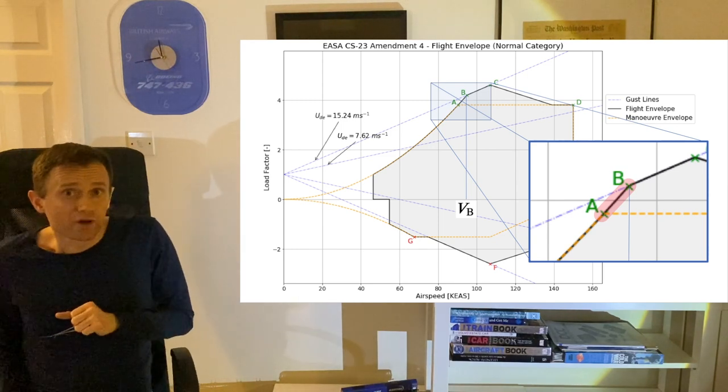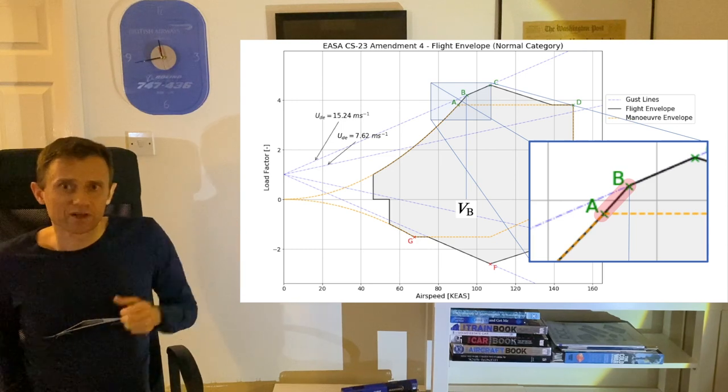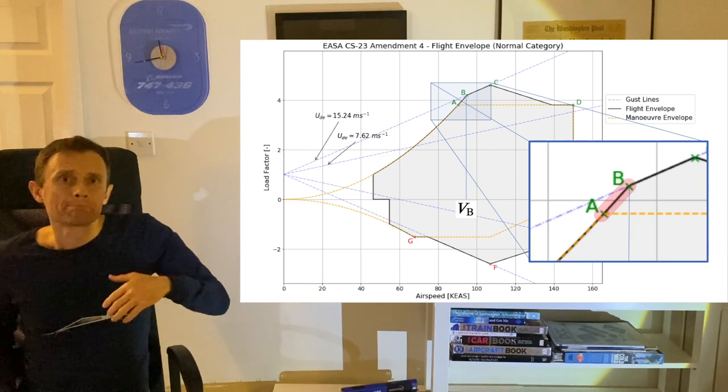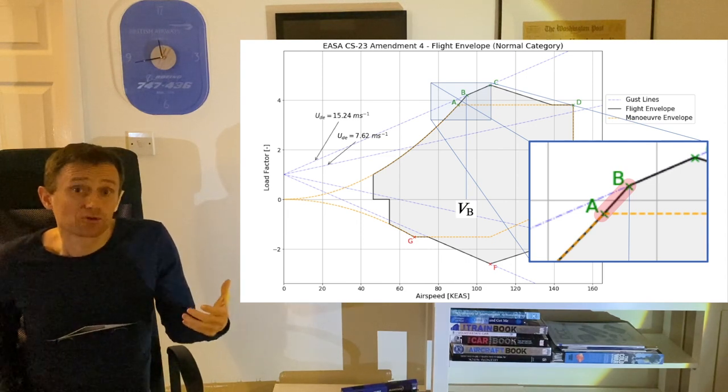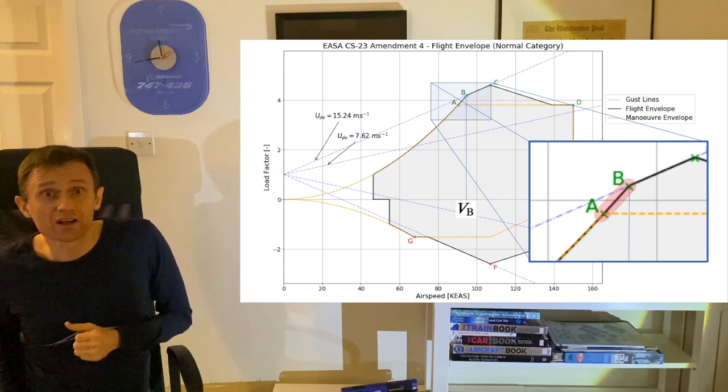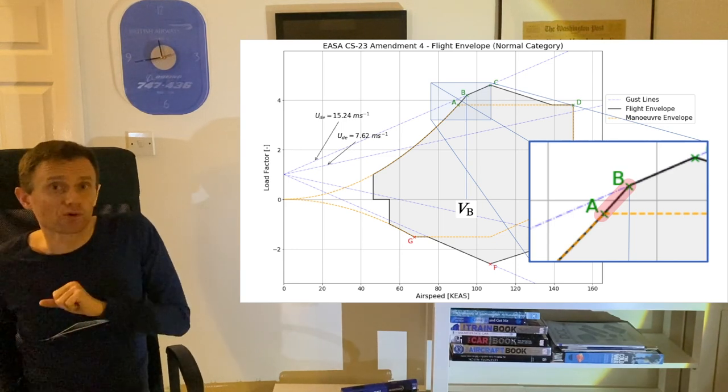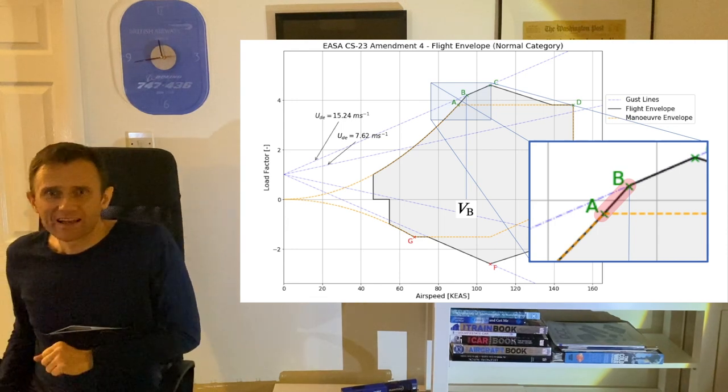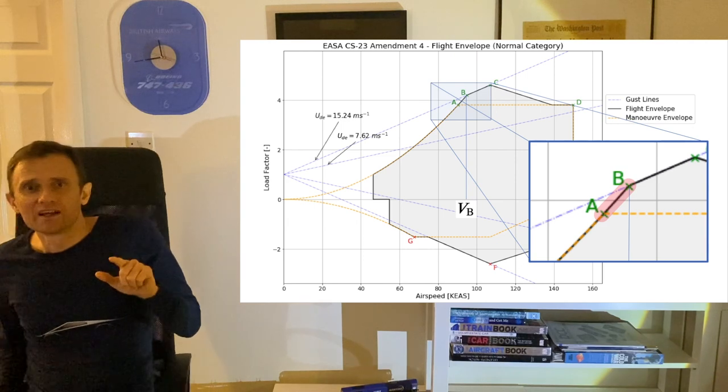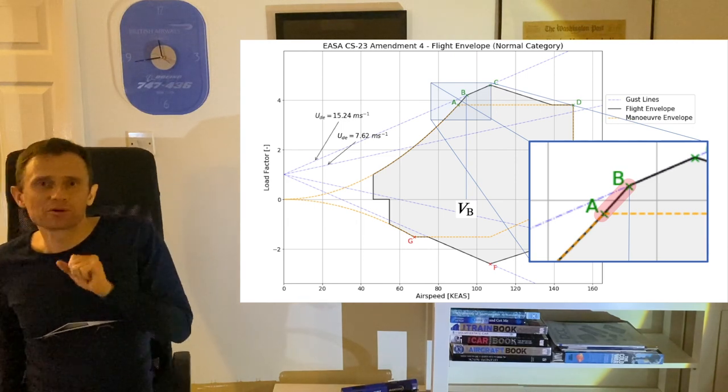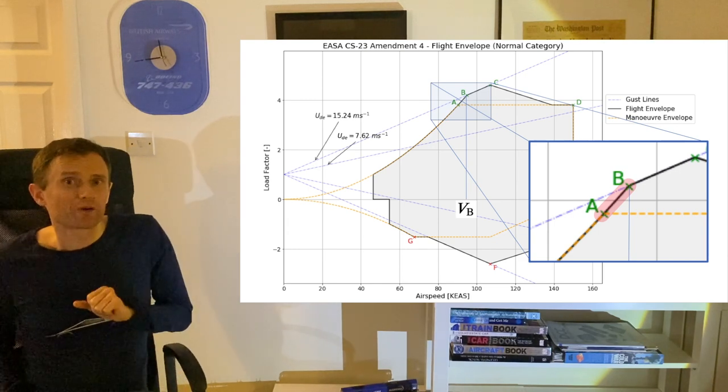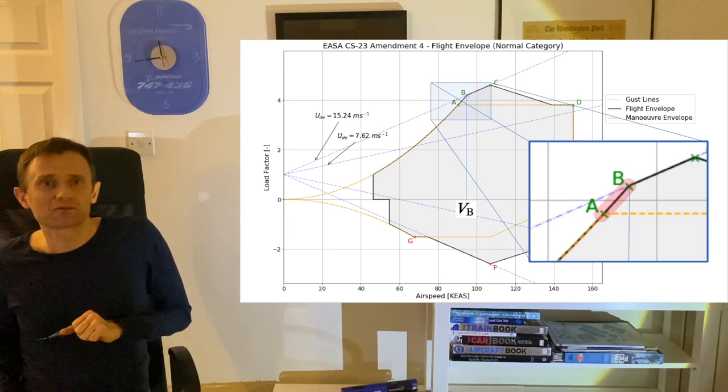This speed is noteworthy because above it, the strongest expected gust—50 feet per second in this case, but may have to be assumed as high as 66 feet per second for commuter category aircraft—could cause the aircraft to stall. A hat tip to Snorri Gudmundsson for pointing out in his GA aircraft design book that this corner does not appear in the example diagram shown in part 23, but may well be a feature of aircraft with low wing loadings.